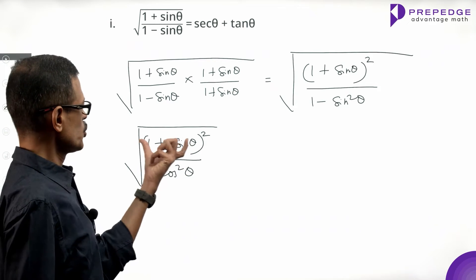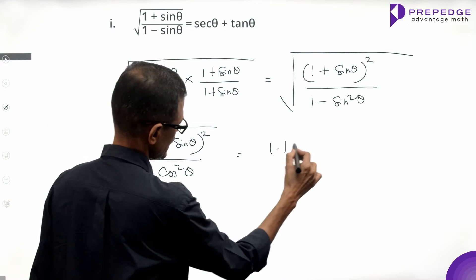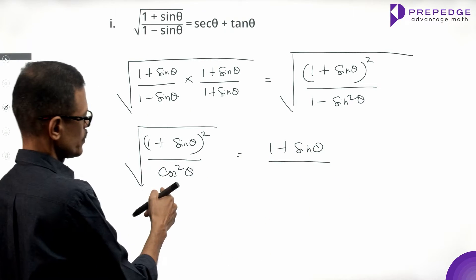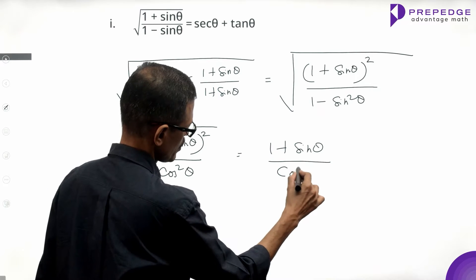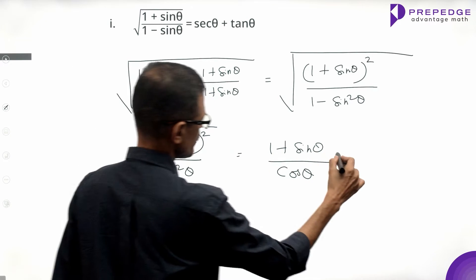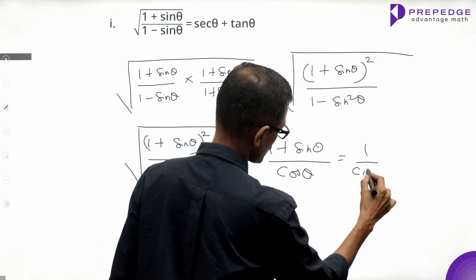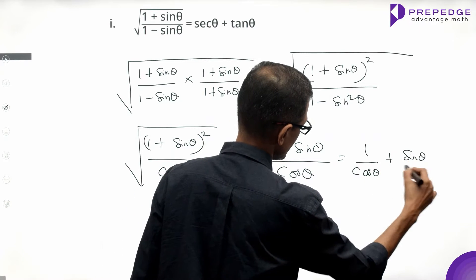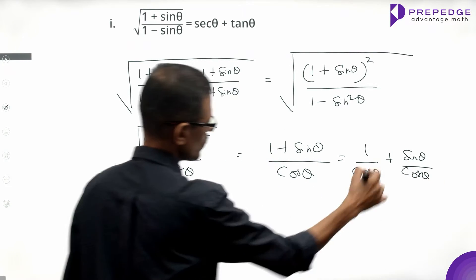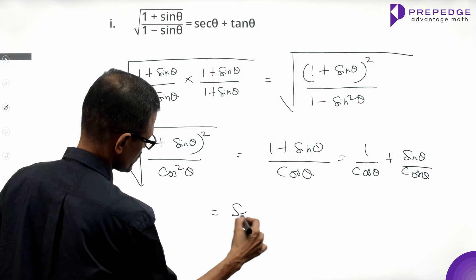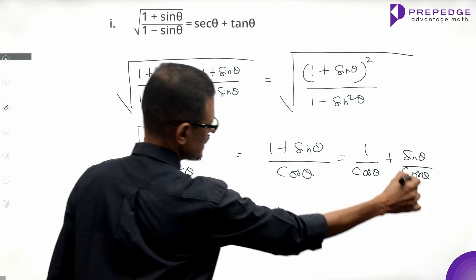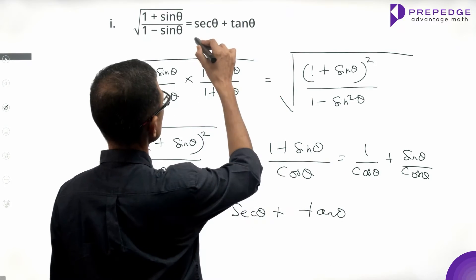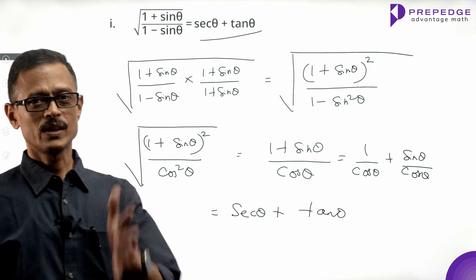Taking the square root, the numerator becomes 1 plus sin theta, and the denominator, square root of cos squared theta, becomes cos theta. We can write this as 1 over cos theta plus sin theta over cos theta. Now, 1 over cos theta equals secant theta, and sin theta over cos theta equals tan theta, which is what we needed to prove. Part 1 is done.